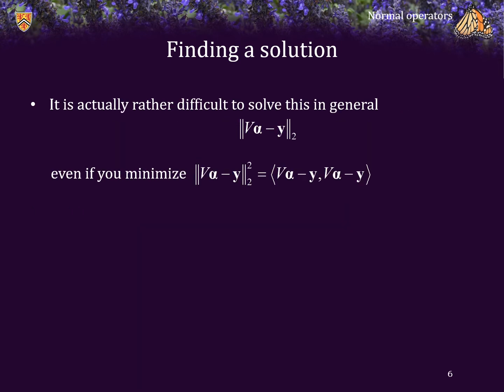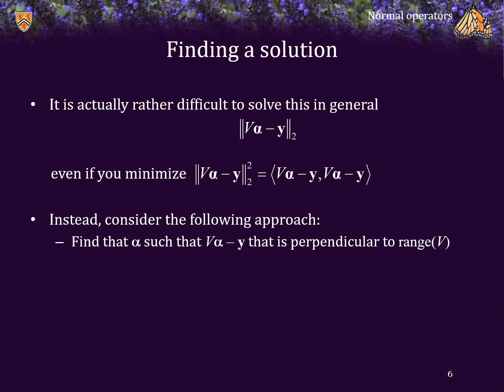Now, if you're just trying to find that alpha such that V times alpha minus y is minimized, this is actually very difficult to solve in general, even if you do try to minimize the square of that error where this is now an inner product. Instead, consider the following approach: find that alpha such that V times alpha minus y is perpendicular to the range of V. After all, that's one way of finding the result when we got to finding the projection. This may also sound familiar because we discussed this a few topics back. So let's review those topics as we reintroduce this material.